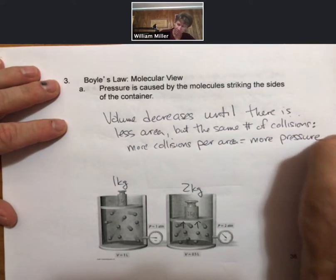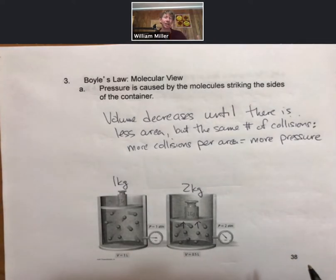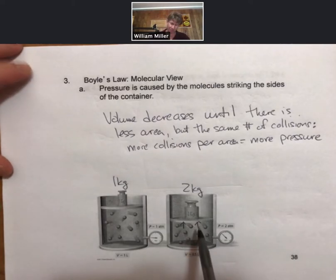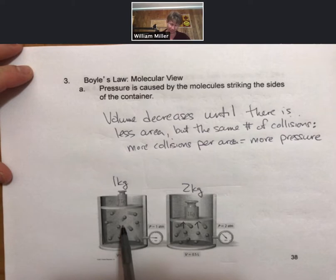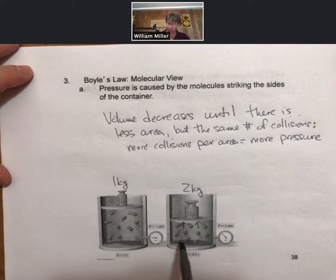We're not going to attempt to motivate exactly why there's a linear relationship or an inversely proportional relationship between the two. All we're trying to motivate here is that as you shrink this down in volume with more pressure and more mass, the same number of collisions over a smaller container size ends up having more collisions and more pressure to push against the 2 kilogram mass.